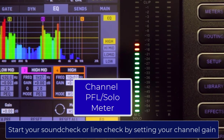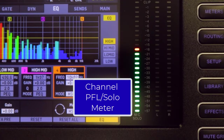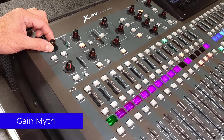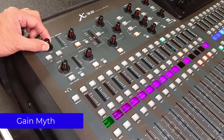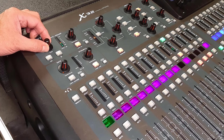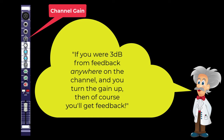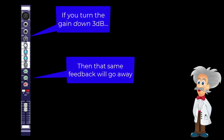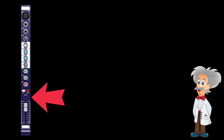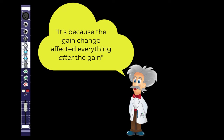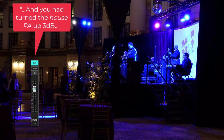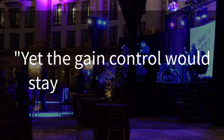There's also a misconception that there's some magic, perfect, or wrong gain setting that will eliminate or cause feedback. That's simply not true. Volume and frequency levels cause feedback — and feedback doesn't care where that volume comes from. The misconception likely gets oxygen because if you're 3dB away from feedback and turn the gain up 3dB, then of course you'll get feedback. And if you turn the gain down 3dB, the feedback will go away. But it's not because of the gain setting itself if you don't take signal flow into consideration — it's because the gain change affected everything after the gain.